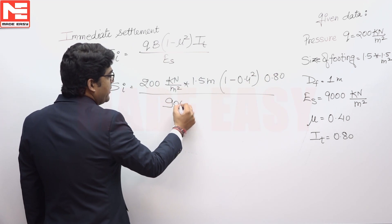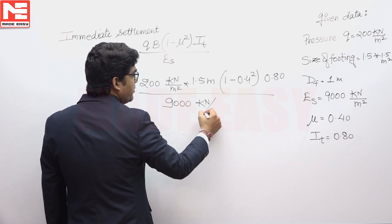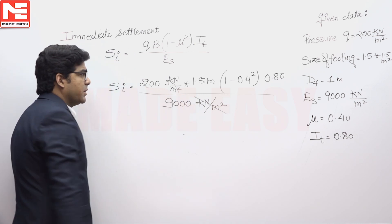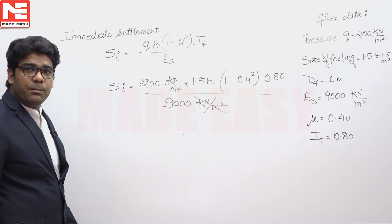9000 kilo Newton per meter square. So this kilo Newton per meter square, kilo Newton per meter square is cancelled, the final answer will be in meter.